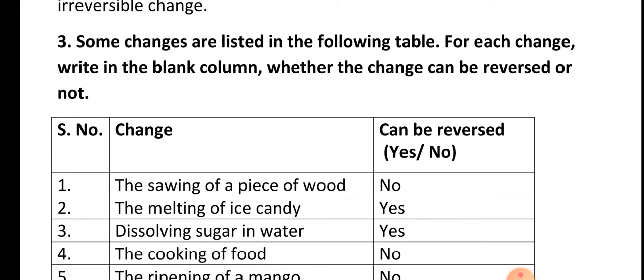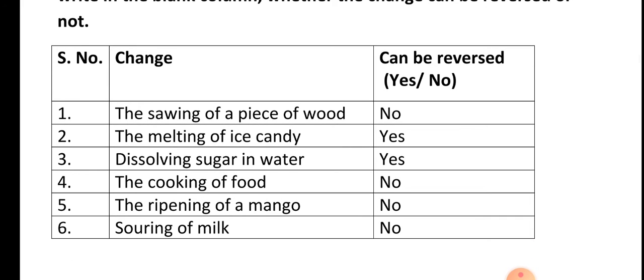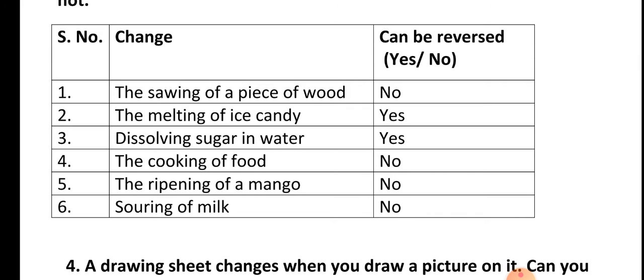Question number three: Some changes are listed in the following table. For each change, write in a blank column whether the change can be reversed or not. Answer: First, the sawing of a piece of wood — sawing means cutting — so cutting a piece of wood is an irreversible change because the length of the wood gets changed. Second, melting of ice candy is a reversible change; the melted ice candy again converts into solid form if you keep it inside the refrigerator.